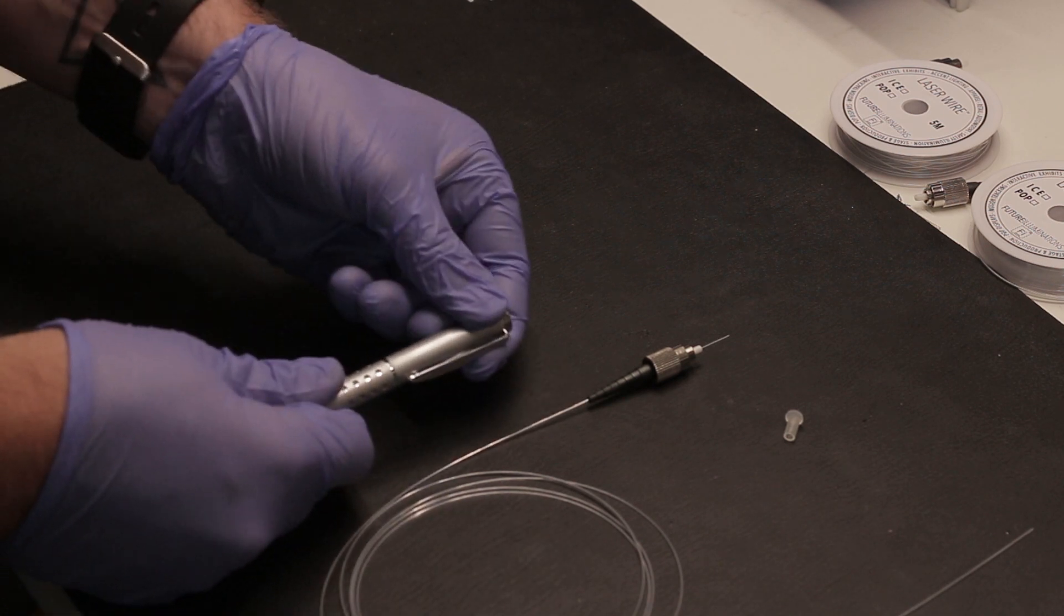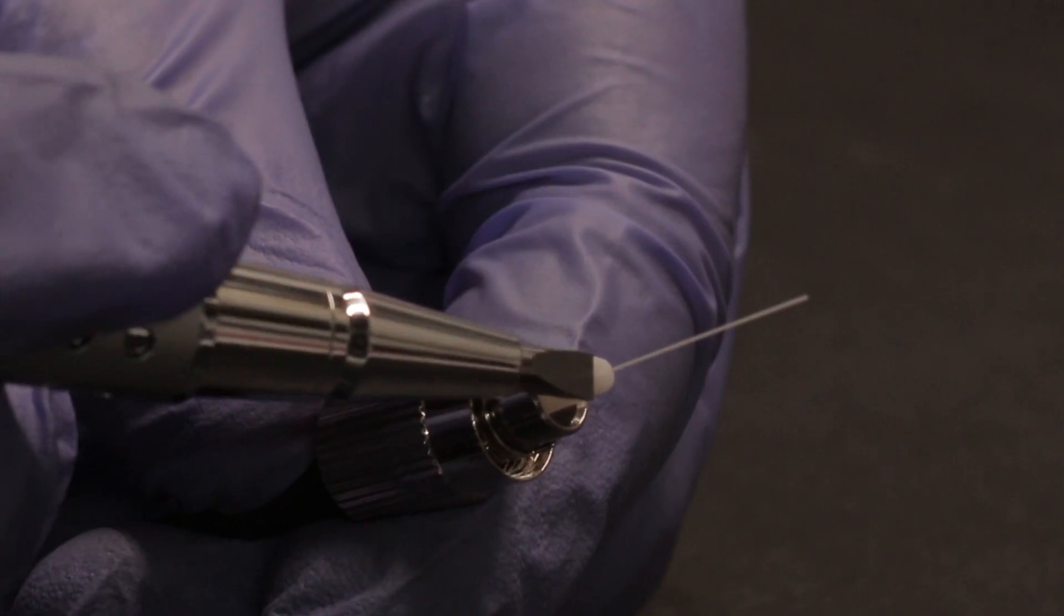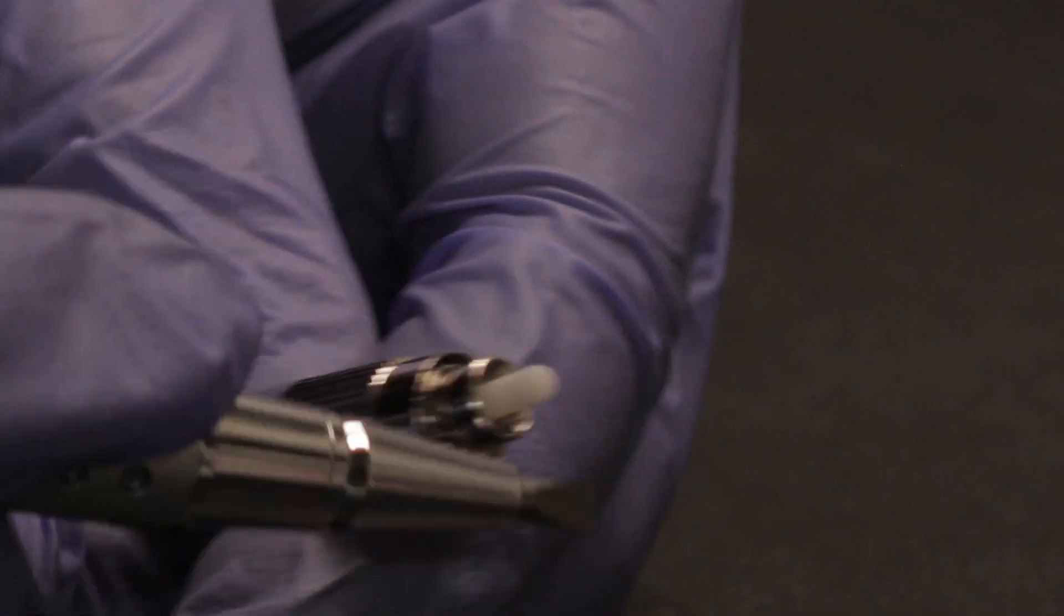After waiting 15 minutes, use the fiber scribe to score the glass core and cleanly break near the base of the FC connector.